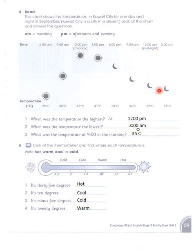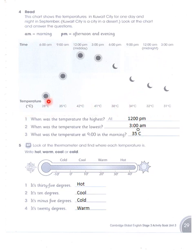At 12 AM, that is midnight, it is 32 degrees centigrade, and at 3 o'clock at night it is 31 degrees centigrade. These are the times and their corresponding temperatures. The sun shows that it is very hot, and the moon shows that it starts becoming cool.